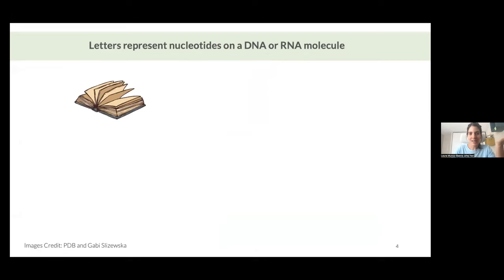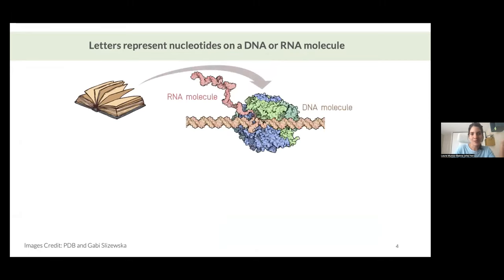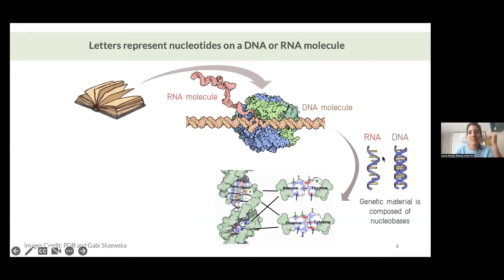When we open this book, what we see is molecules. And these molecules are, for most living beings, DNA. But for viruses, they can also be RNA. A polymerase is just a protein that is creating an RNA molecule from a DNA molecule. What I want you to keep in mind is that these are two very similar molecules because they are made of nucleobases — the same compound. Nucleobases are these smaller molecules that can be either adenine, cytosine, thymine in DNA, or uracil in RNA.